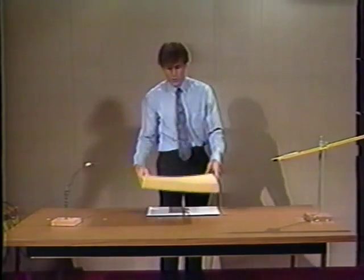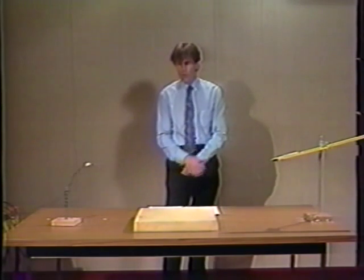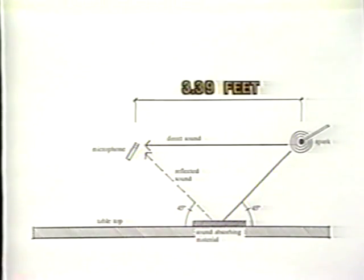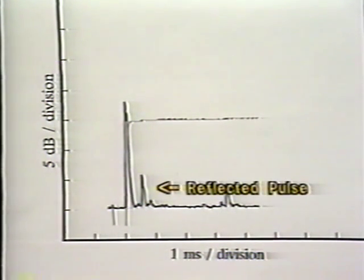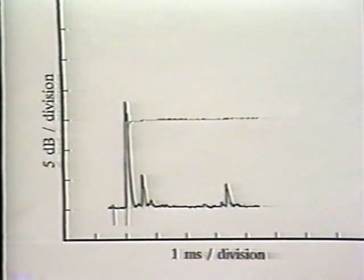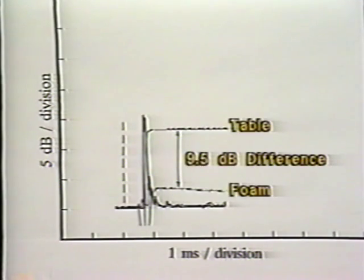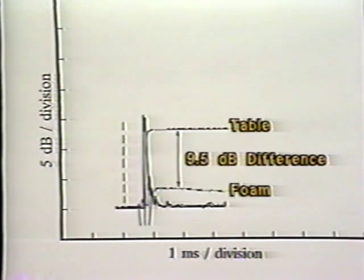Now let's place the piece of absorbent material back on the tabletop, keeping the source and microphone in the same relative positions. The integrated energy level and the peak of the reflected pulse are both noticeably lower than in the previous example due to the absorption at the surface. Using the processor, it's possible to delay the start of the trace until just after the arrival of the direct sound, allowing us to record just the reflected pulse. The difference between the integrated energy levels for the two conditions allows one to calculate the absorption coefficient, alpha, at a 45 degree angle of incidence.